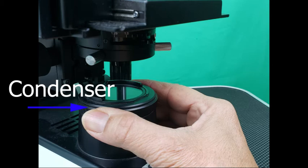Condenser: Located just below the stage, it aligns the light beam through an opening in the stage and through the specimen. In many microscopes, the condenser includes a knob that raises and lowers the condenser to control light intensity.